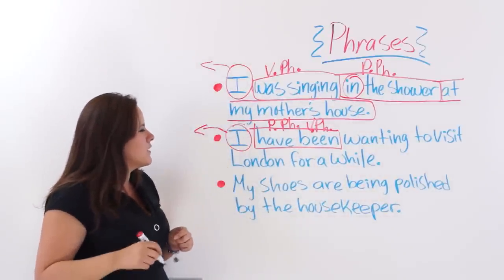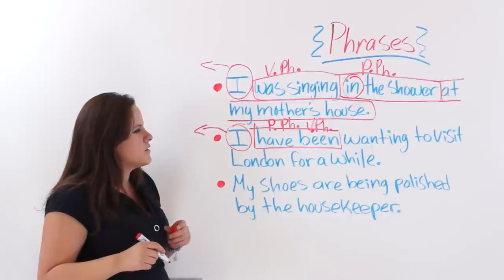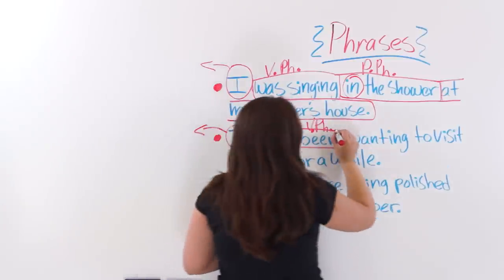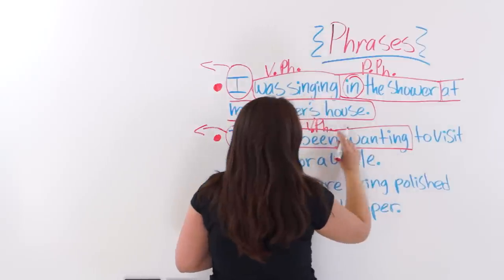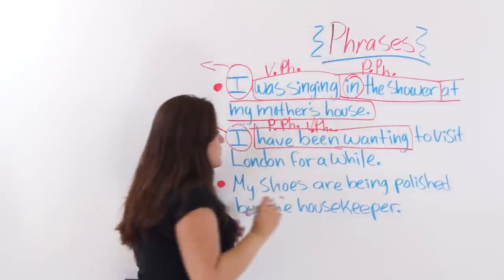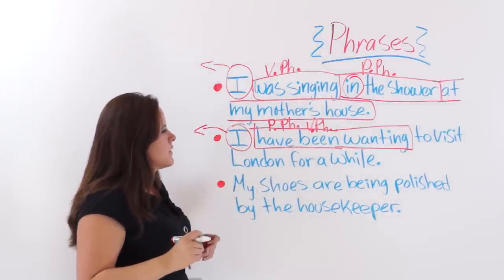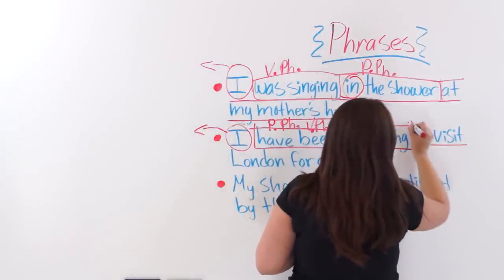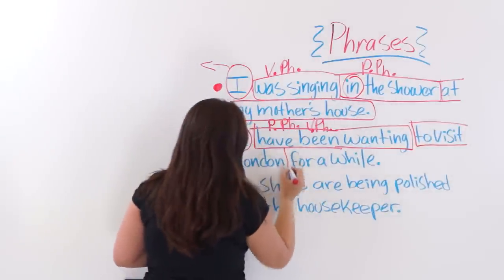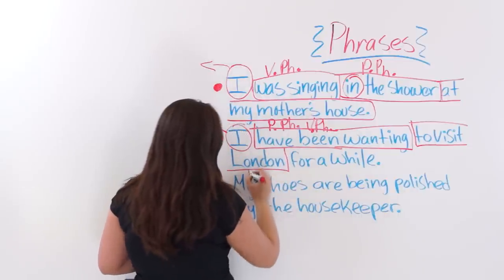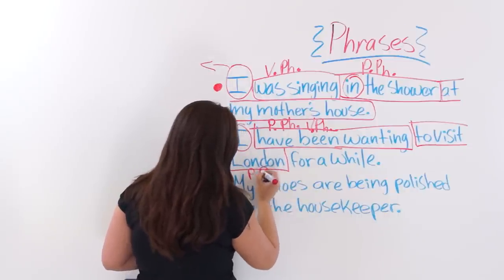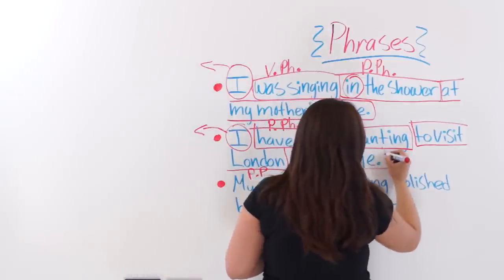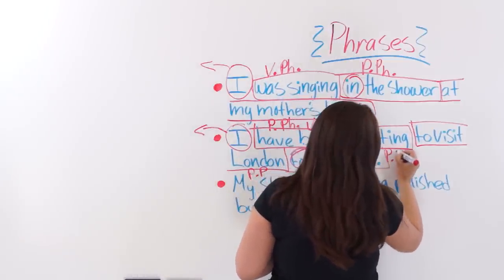'Wanting to visit London' — actually, the verb phrase extends to 'have been wanting'. 'To visit London' is a prepositional phrase. And 'for a while' — we have another preposition — so 'for a while' is also a prepositional phrase.